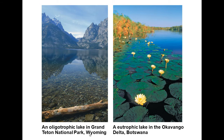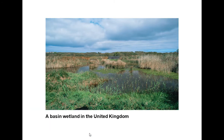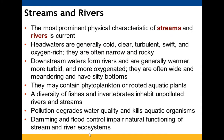Human inputs of additional nutrients can lead to algae blooms, oxygen depletion, and fish kills. Wetlands — such as those found at our school — are habitats inundated by water at least part of the time, supporting plants adapted to water-saturated soil. They have high organic production, high decomposition, and low dissolved oxygen. They can develop along shallow basins, flooded river banks, or coasts of large lakes and seas. They are among the most productive biomes on Earth. Wetland plants include lilies, cattails, sedges, tamarack, and black spruce, and they support diverse invertebrates, birds, otters, frogs, and alligators. Humans have destroyed up to 90% of wetlands, which help purify water and reduce flooding.